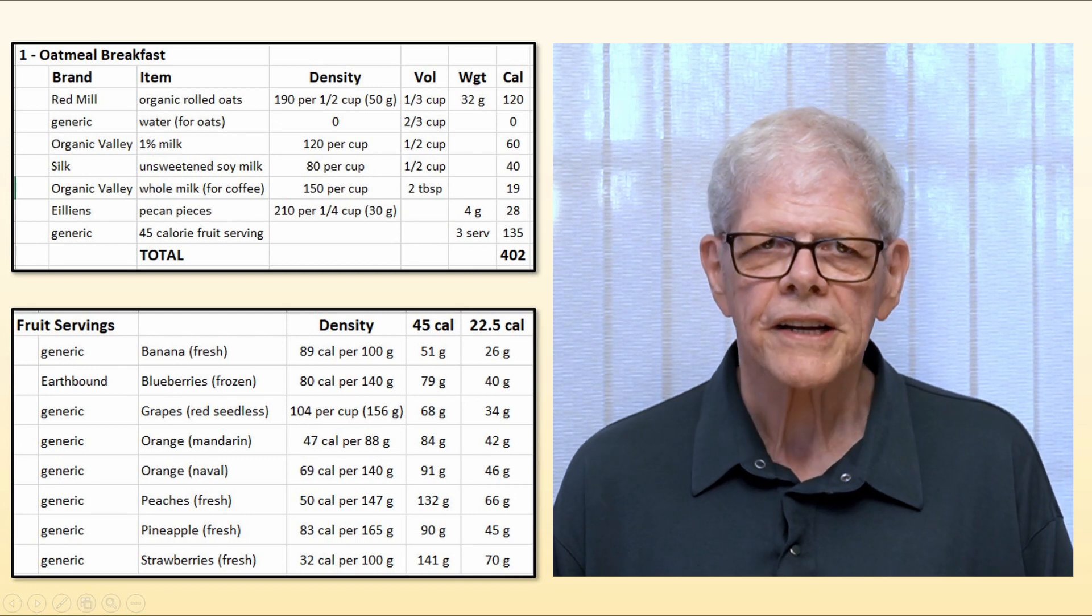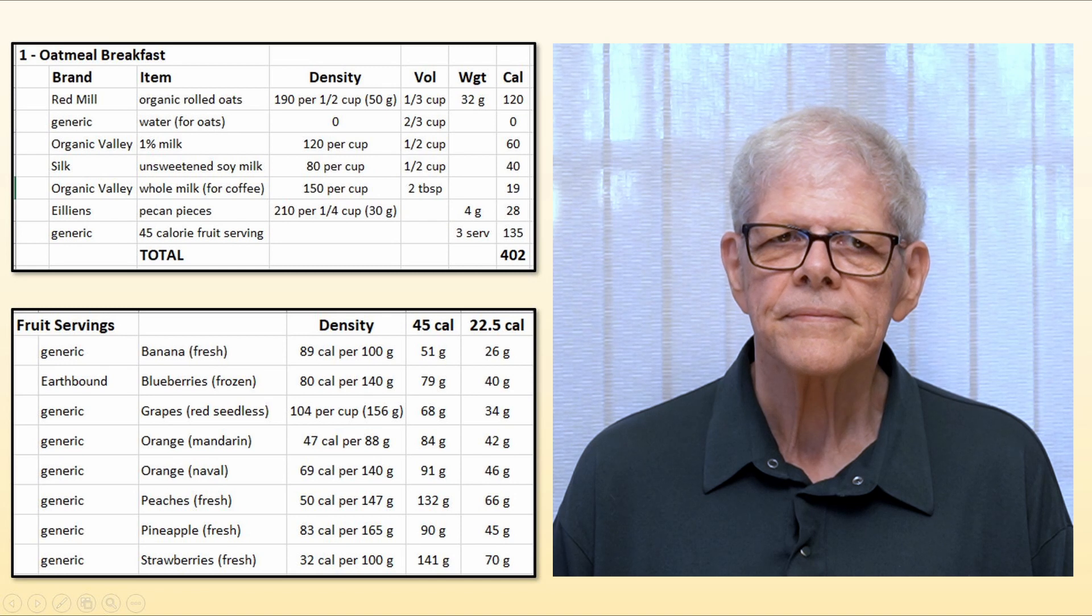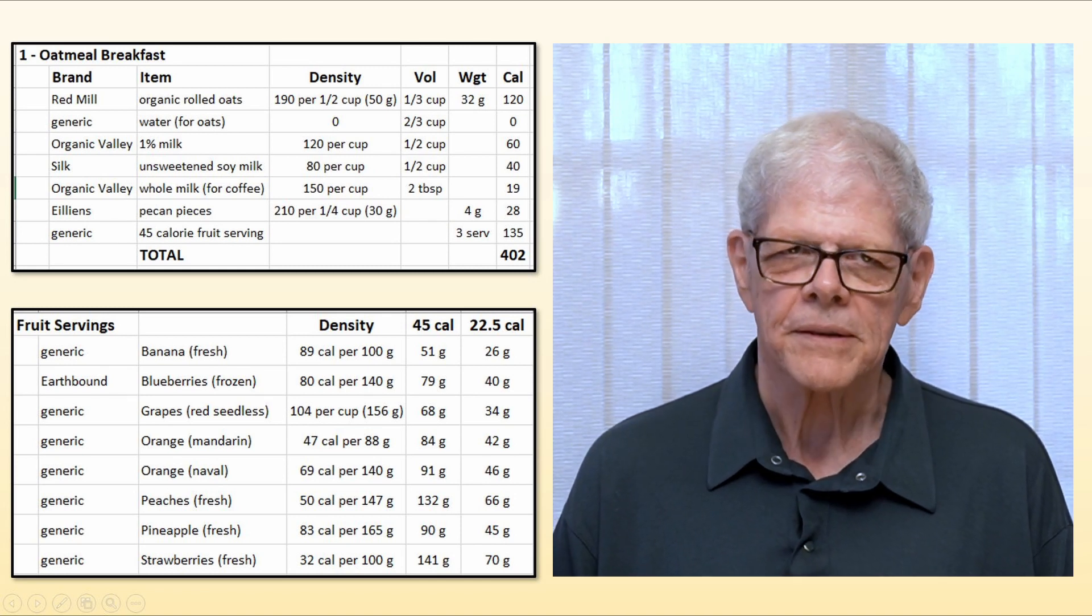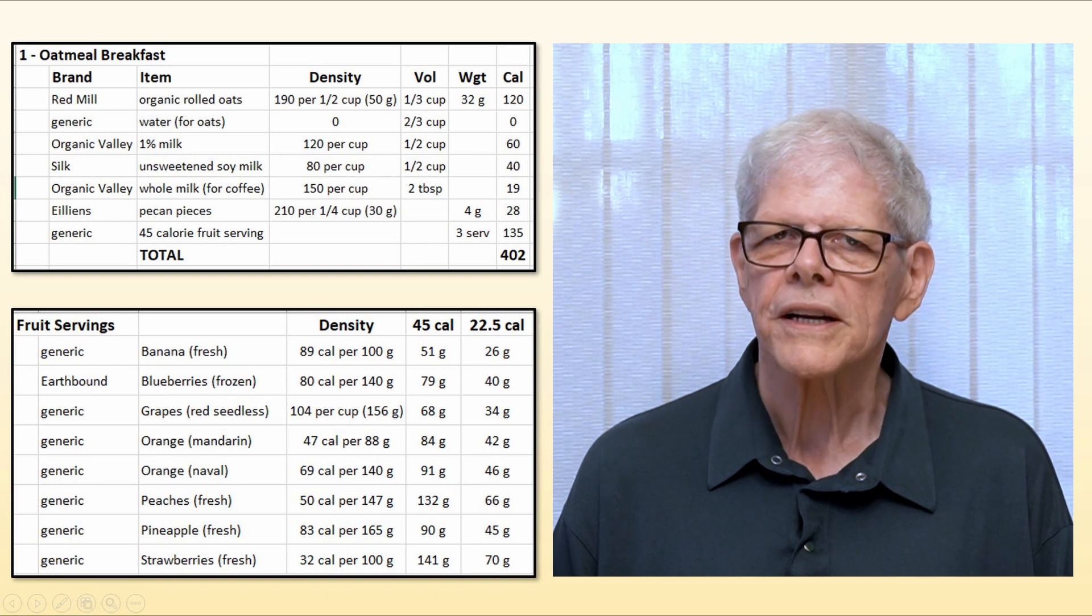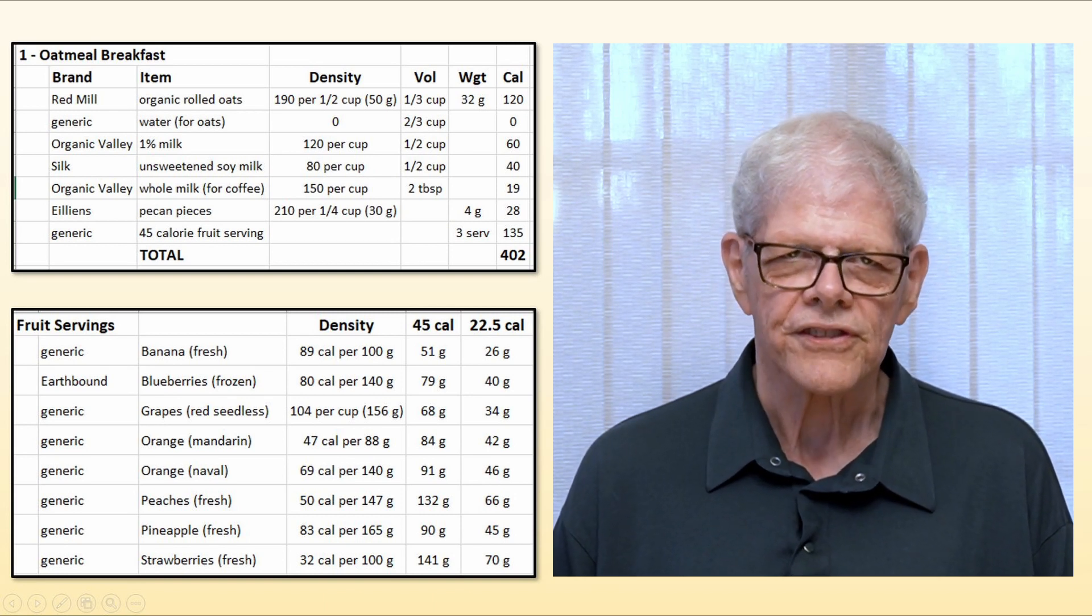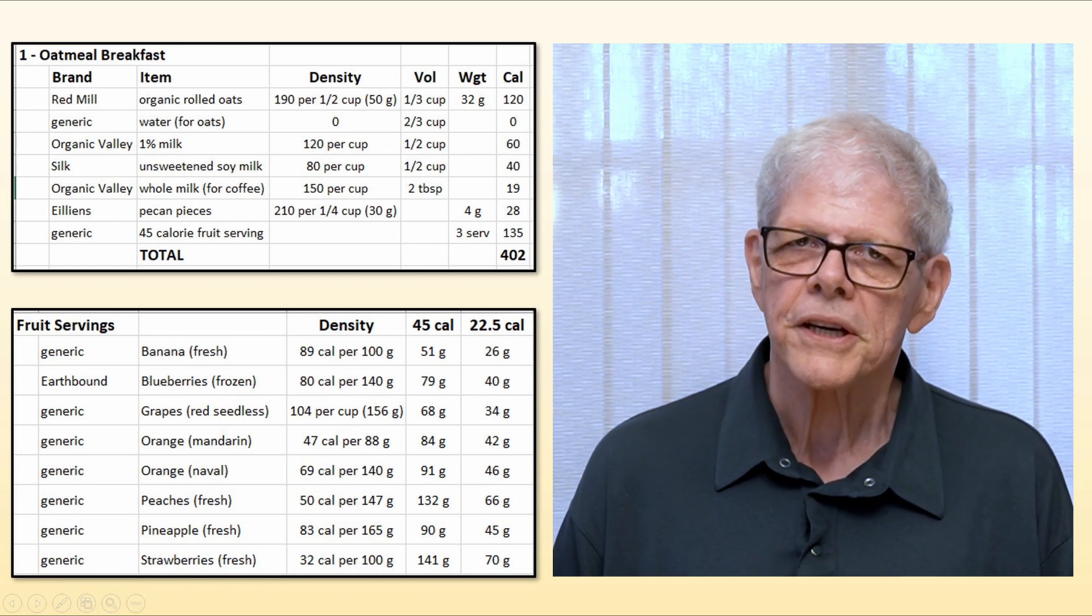I find that weight is usually a more accurate way to measure things than volume when both are available. And last, the calories column shows how many calories that item adds to the meal based upon the quantity I plan to eat. The last line totals this column and should not be more than the number of calories allocated for the meal.